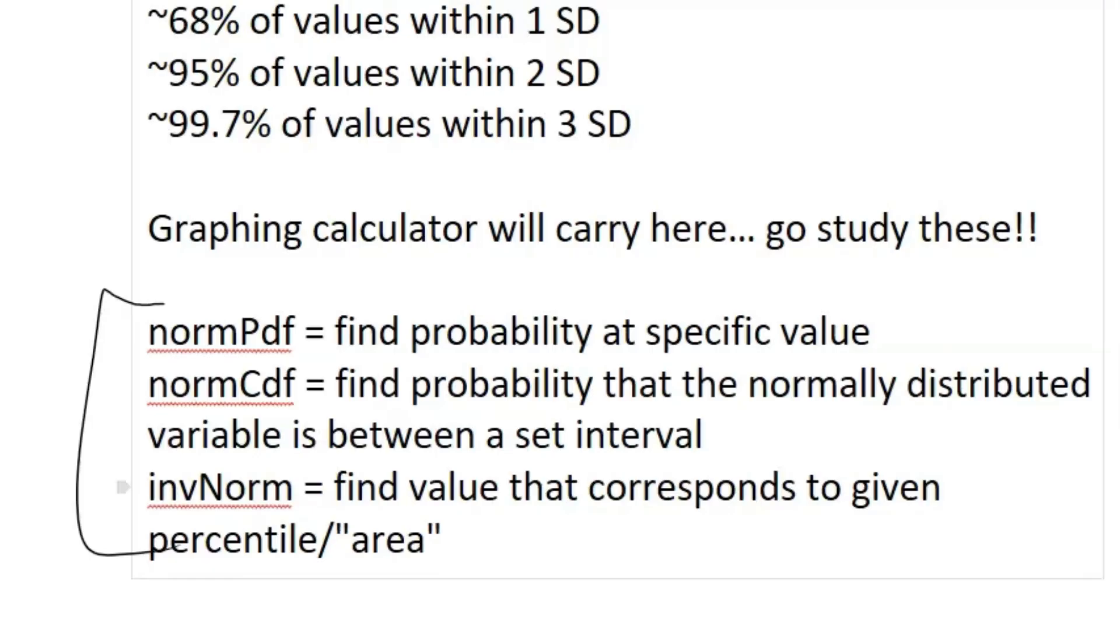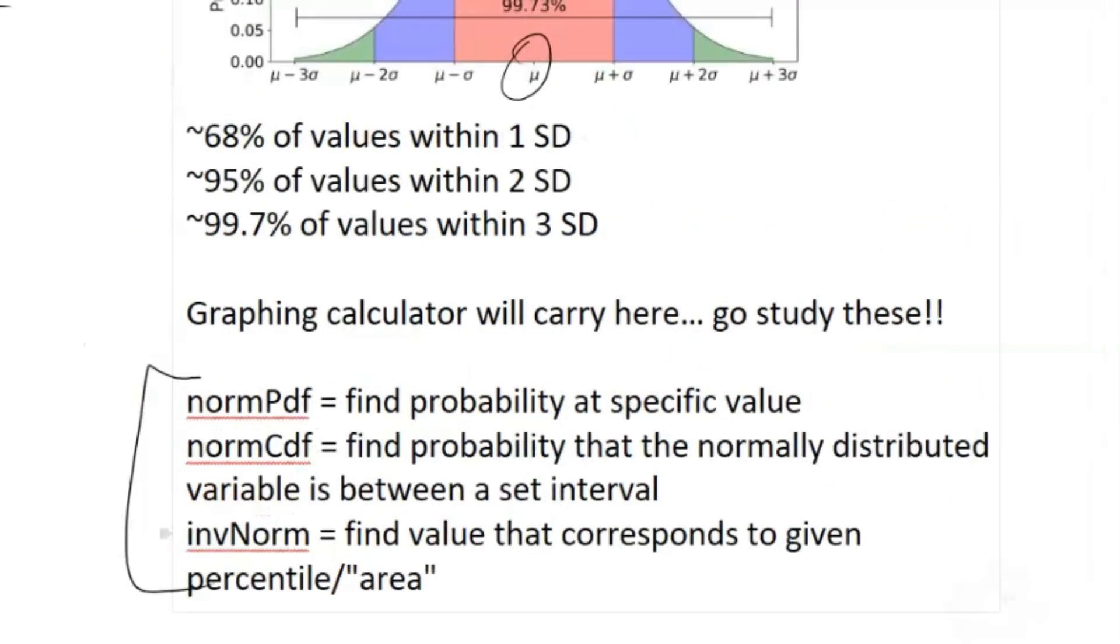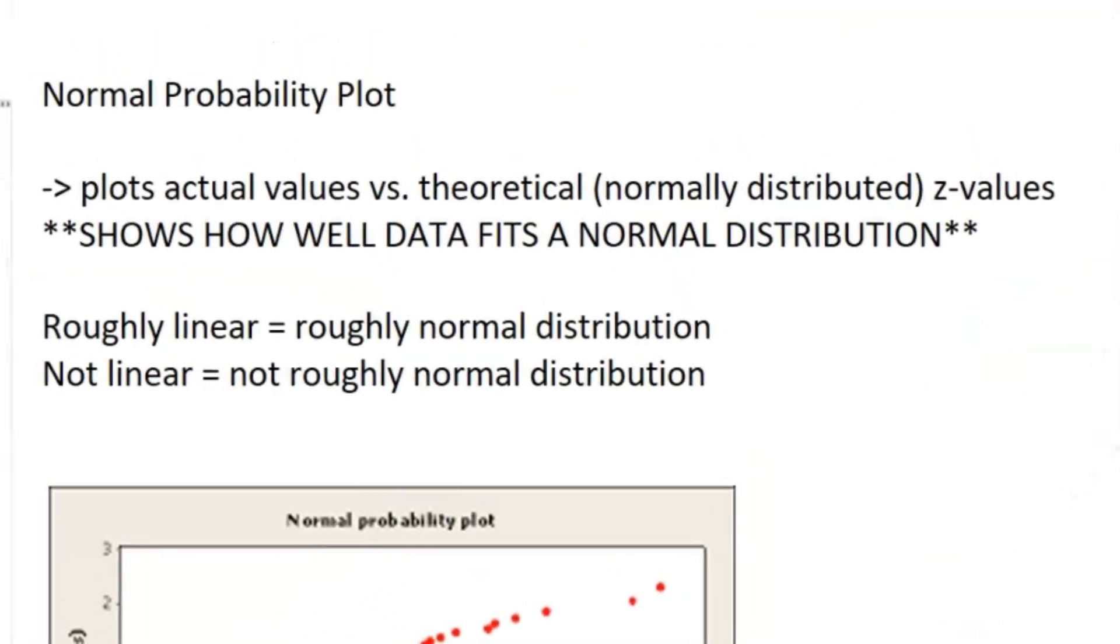And then we have inverse normal, which pretty much does the reverse of these calculations. It finds a value that corresponds to a given percentile, where on your calculator it might be denoted as area.